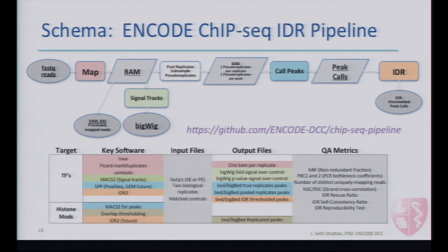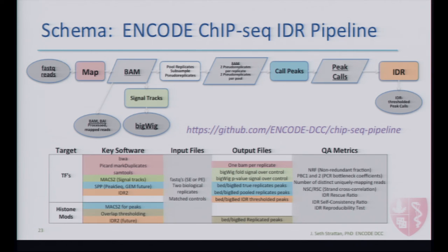For TF ChIP, where we run a full IDR protocol, there are additional pseudo-replicates generated — pseudo-replicates of the true replicates are also generated and fed into the IDR framework. Those are not accessioned on the portal, so you'll never see those files; they exist only within the pipeline. But they contribute to the IDR-thresholded peaks that you get in a TF ChIP experiment. It's a subsampling and pseudo-replication within true replicates run through this framework to provide an unbiased quantitative way of determining whether the peak came from both replicates.